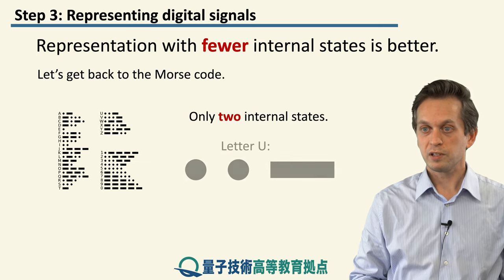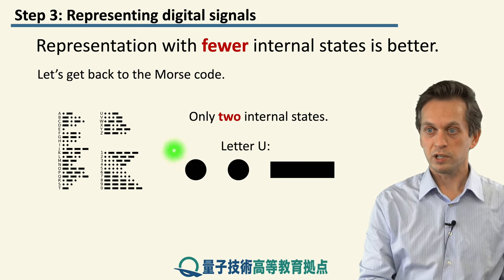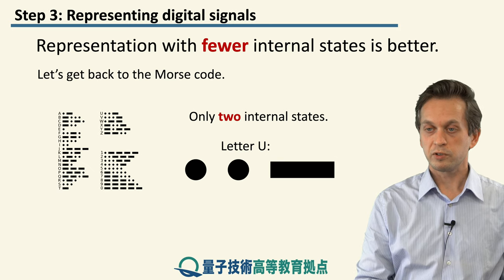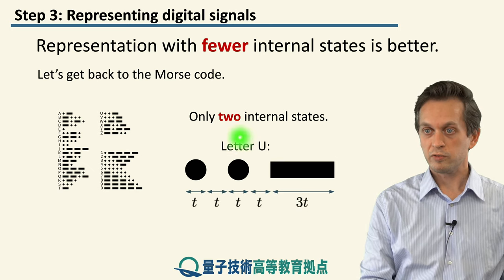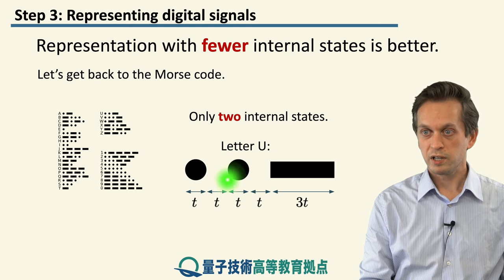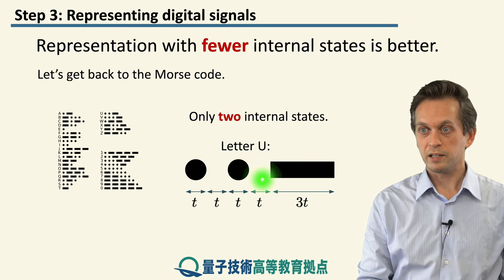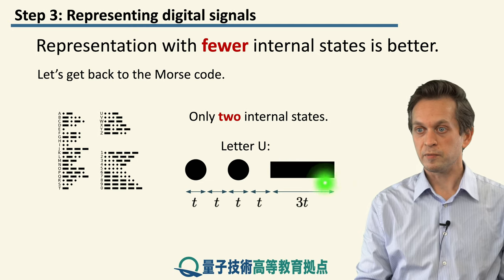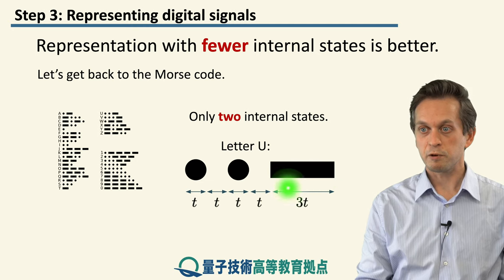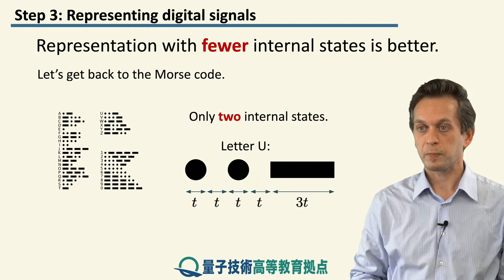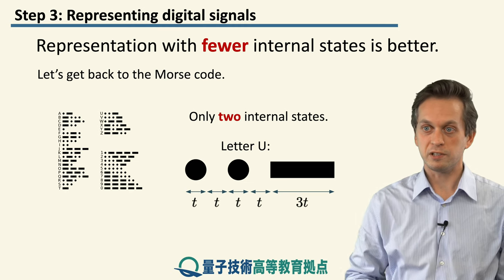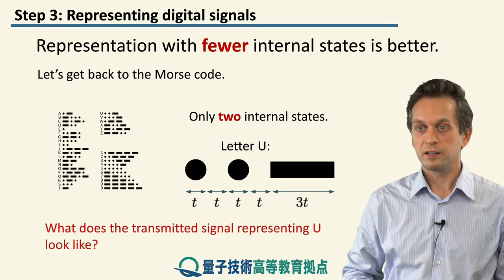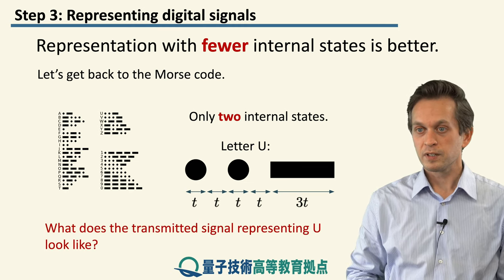For example, if you want to encode the letter U, you have a short signal for time period T, then no signal for the same amount of time, then again a short signal, then no signal, and then a signal that takes three times the amount of time as the short signal.